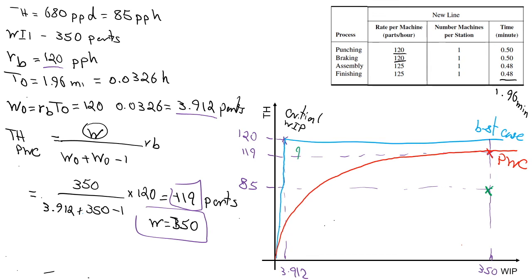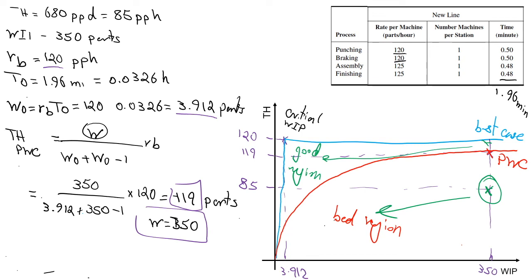With the good region and bad region identified on the plot, we see that the current situation of the new line falls in the bad region — meaning the new line is not performing well. Comparing this to the old line, which was in the good region, the management's claim is not correct. Although the new line has higher throughput with lower WIP, it is not actually performing well relative to its potential. This illustrates that in real-world systems, intuition is often wrong and calculations or simulation are needed to understand actual system behavior.